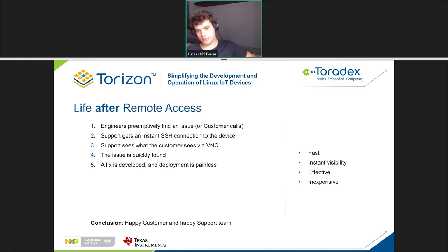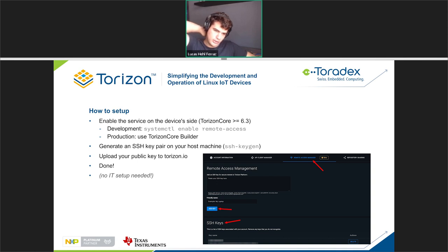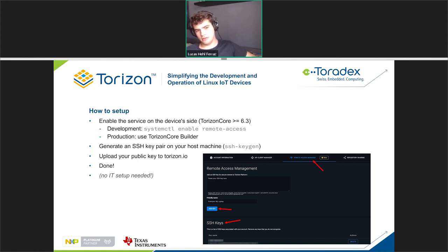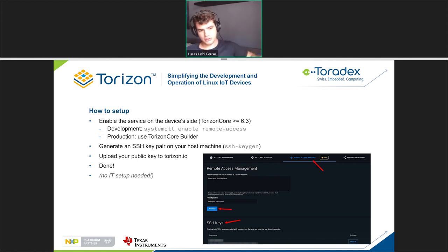Setting up the feature: it's built-in on the device side with Torizon Core version 6.3 or later. When you're in development you can flash the newest Torizon Core on your board and manually enable the remote access service. In production we recommend using Torizon Card Builder — the tool that allows you to customize Torizon Core without needing to go to Yocto — and you can enable the service there. As shown on the website, you generate an SSH key on your host machine and upload the public key to Torizon's platform — that's pretty much it. No IP setup is needed, no fancy firewall port forwarding, no opening of ports.